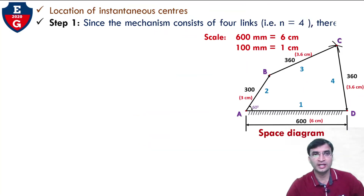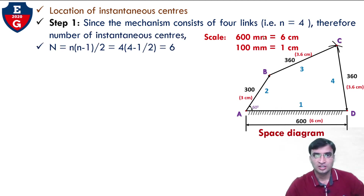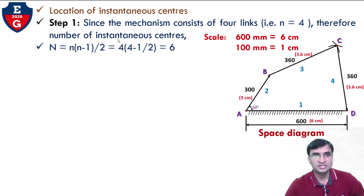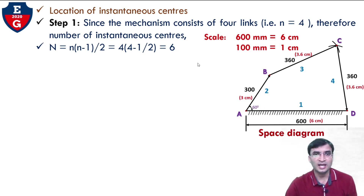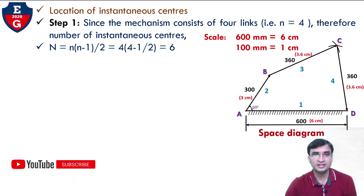Now we have to locate all the instantaneous centers. Step 1: the number of links is 4, so take small n equal to 4. Therefore, the number of instantaneous centers, capital N, equals n*(n-1)/2. Putting in the values: 4*(4-1)/2 equals 6. So we have capital N equal to 6, meaning we have to locate 6 instantaneous centers in this problem.